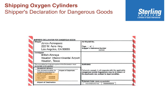Below, under Transport Details, we have Passenger and Cargo Aircraft, and the other box would have said Cargo Aircraft Only. Since this shipment is authorized on passenger aircraft, the shipper has X'd out the non-applicable box, which is Cargo Aircraft Only. Same is true with shipment type — non-radioactive — and the other side says Radioactive.